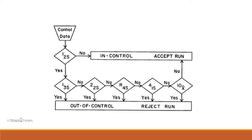This flowchart shows how Westgard rules are interpreted. When a control sample is run and data is obtained, we apply the 1-2S rule. If positive, we check the 1-3S rule and label the specimen out of control. If not positive, the specimen is in control. Consecutively, we look for 1-2S, 1-3S, 2-2S, R-4S, 4-1S, and 10x. If any one rule is positive, the run is rejected.